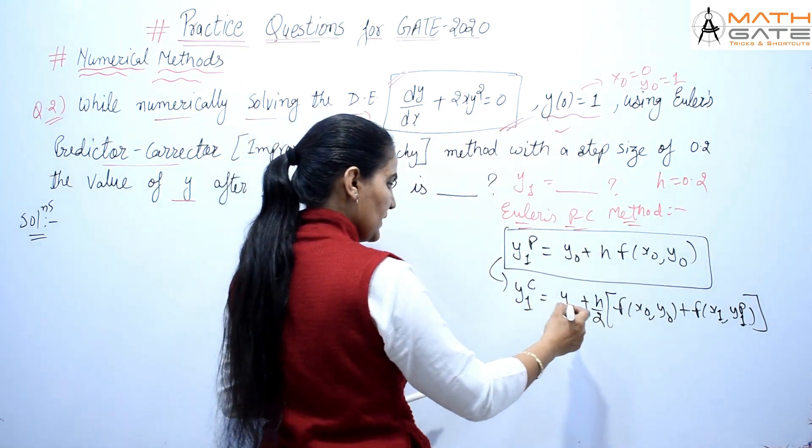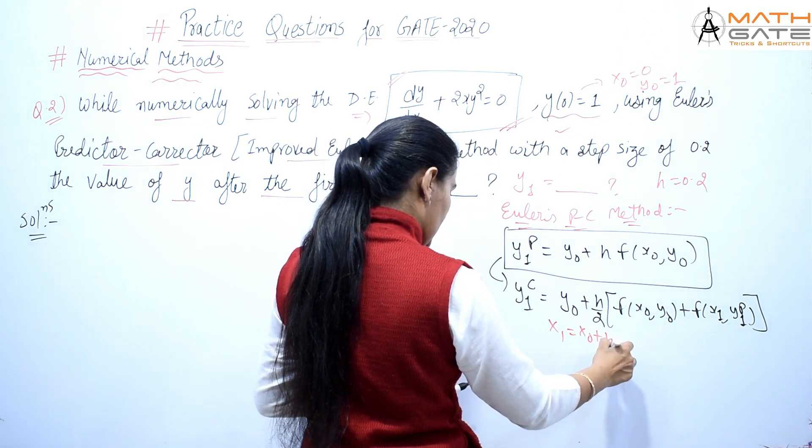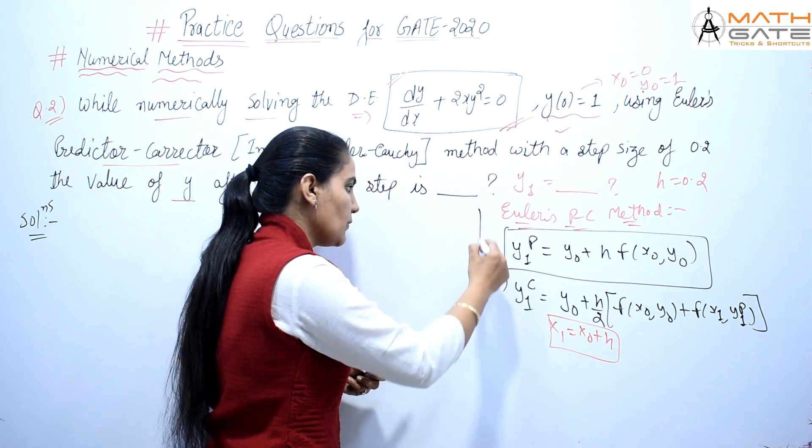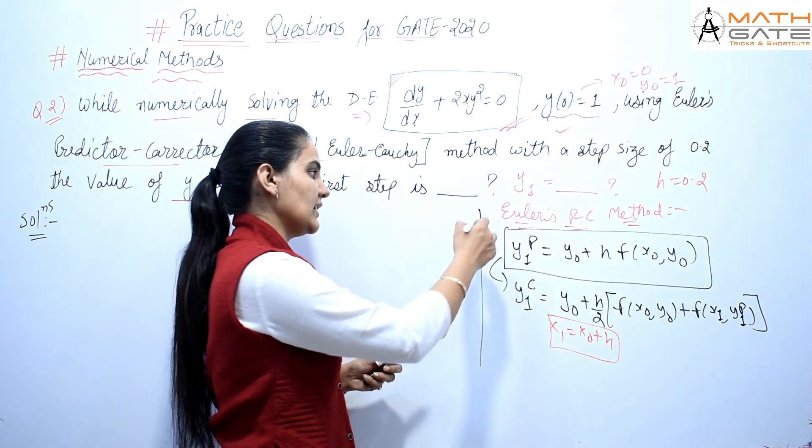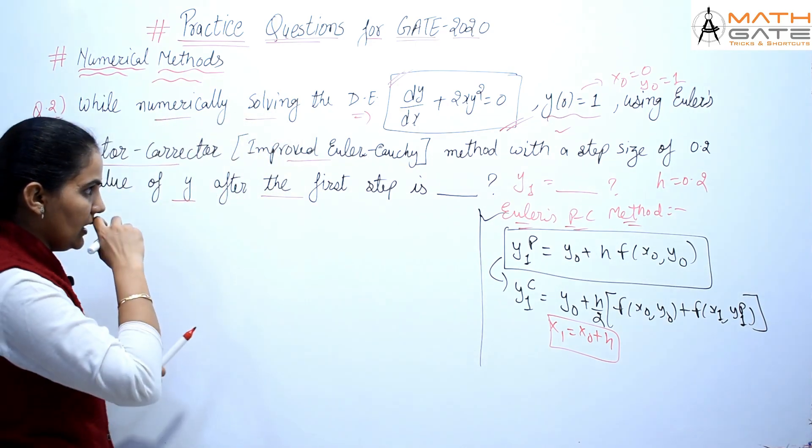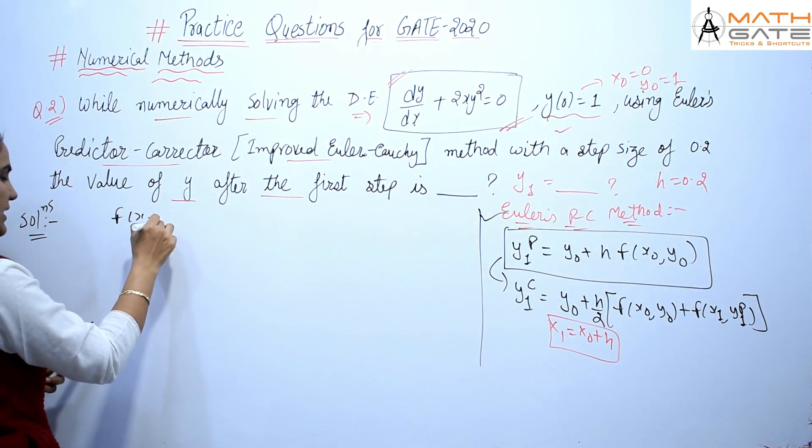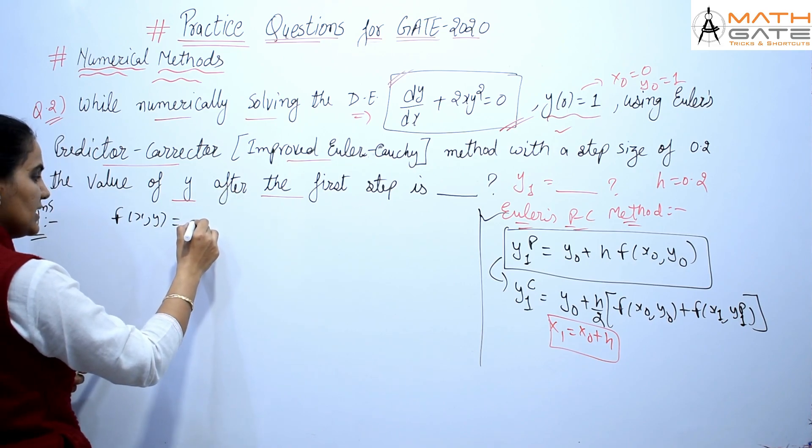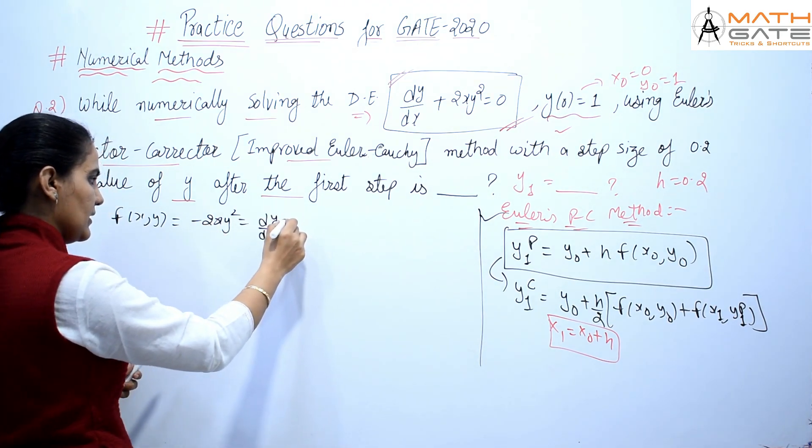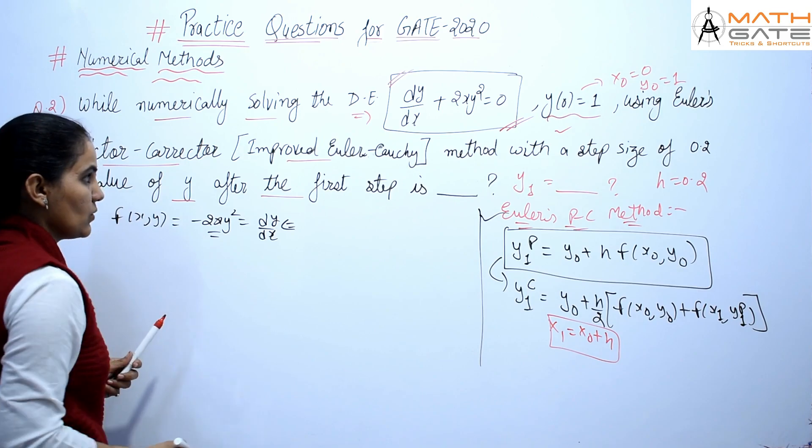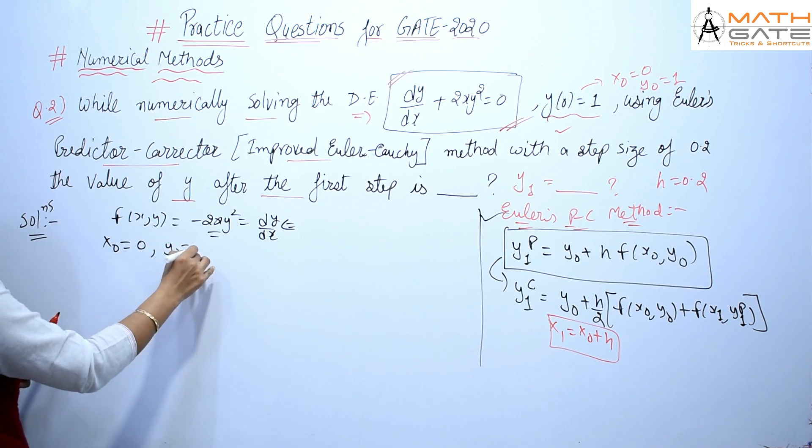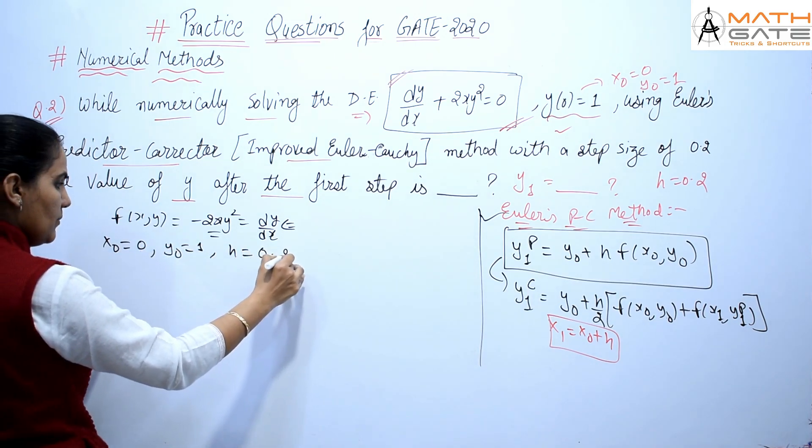First, we get x₁. How do we get x₁? x₁ = x₀ + h. Using f(x,y) equals... here f(x,y) = -2xy². This is dy/dx, and this is my f(x,y). So this value is -2xy². Now the first values: x₀ = 0, y₀ = 1, and h = 0.2.